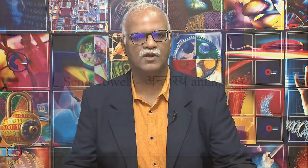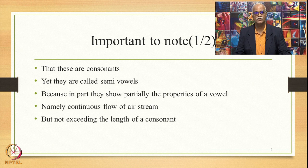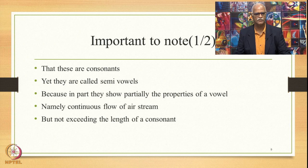Amongst these consonants, we can have some classifications. The first group can be called Semivowels, also known as Antastha. These are consonants, yet they are called Semivowels because they show partially the properties of a vowel — for example, the continuous flow of air stream to an extent, but not exceeding half a mantra. They are called Antastha because they stand in between the vowels and the hardcore consonants.